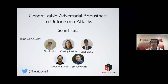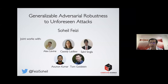Today we are pleased to have Sohail Faizi as our speaker. Sohail is an assistant professor at the University of Maryland College Park and has done a variety of interesting work on adversarial robustness, deep general models, and network coding. He has received the best paper award over a three-year period from the IEEE Transactions on Network Science and Engineering for his work on network maximal correlation. Today he'll tell us about his more recent work on generalizable adversarial robustness to unforeseen attacks. Please welcome Sohail Faizi.